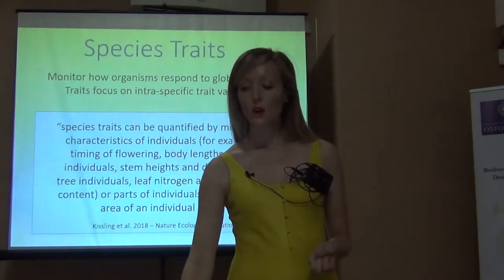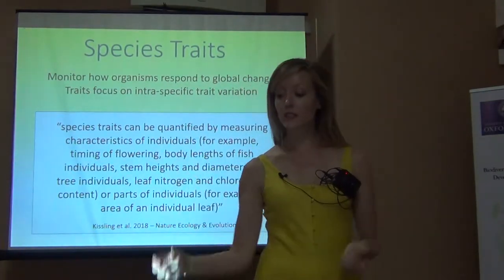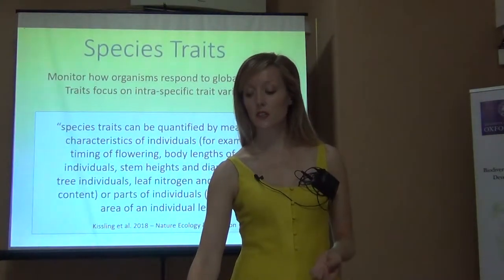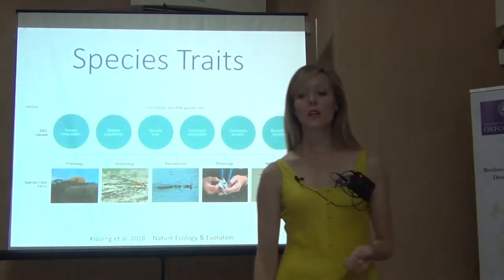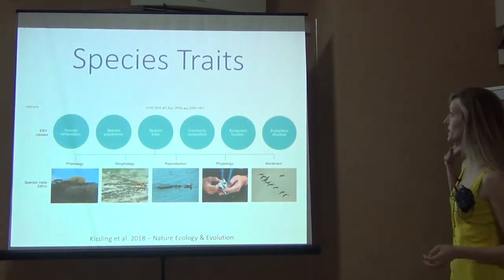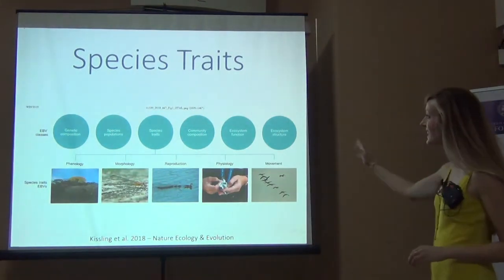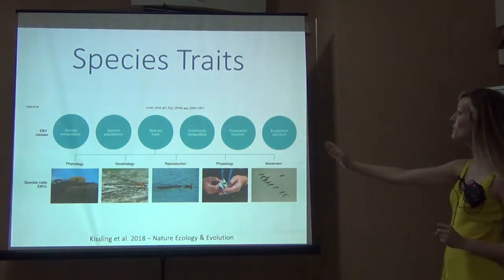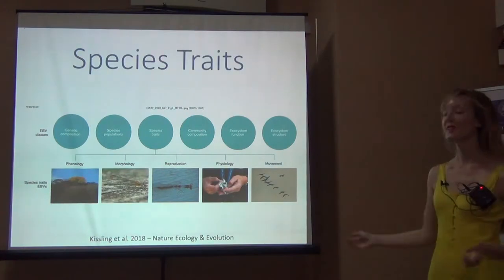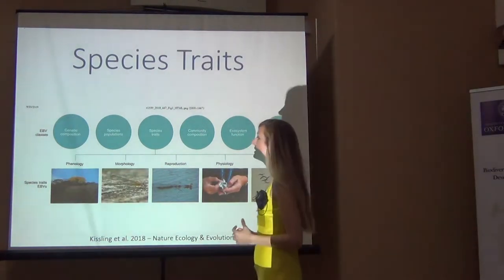Species traits is a broad EBV class — what are the specific variables within it? There are five: phenology, morphology, reproduction, physiology, and movement. Let's discuss what each of these means.